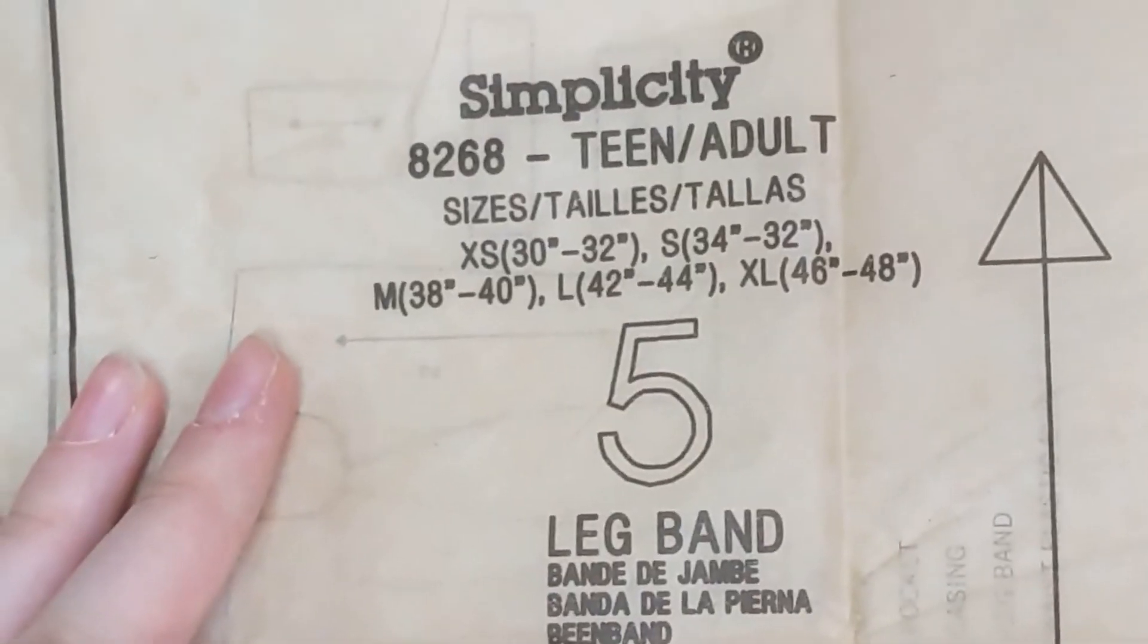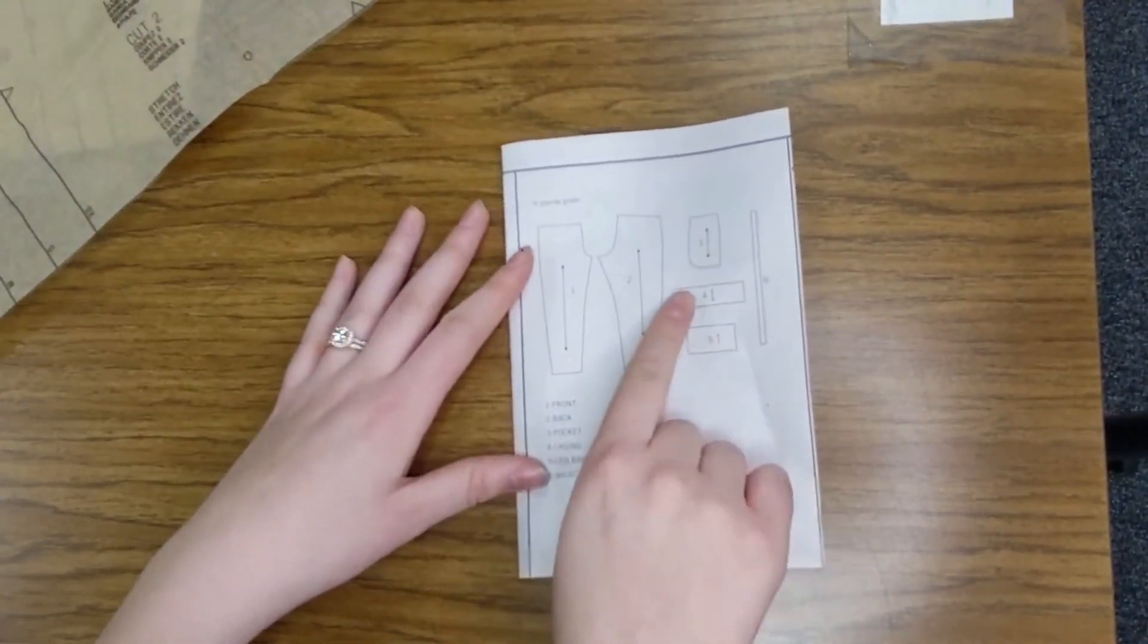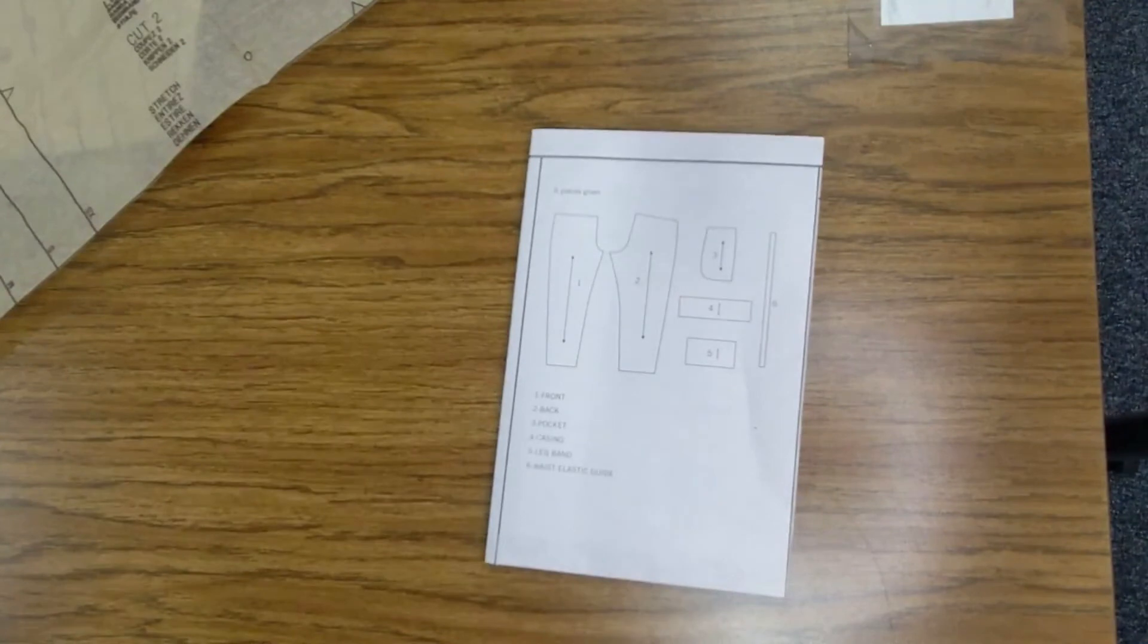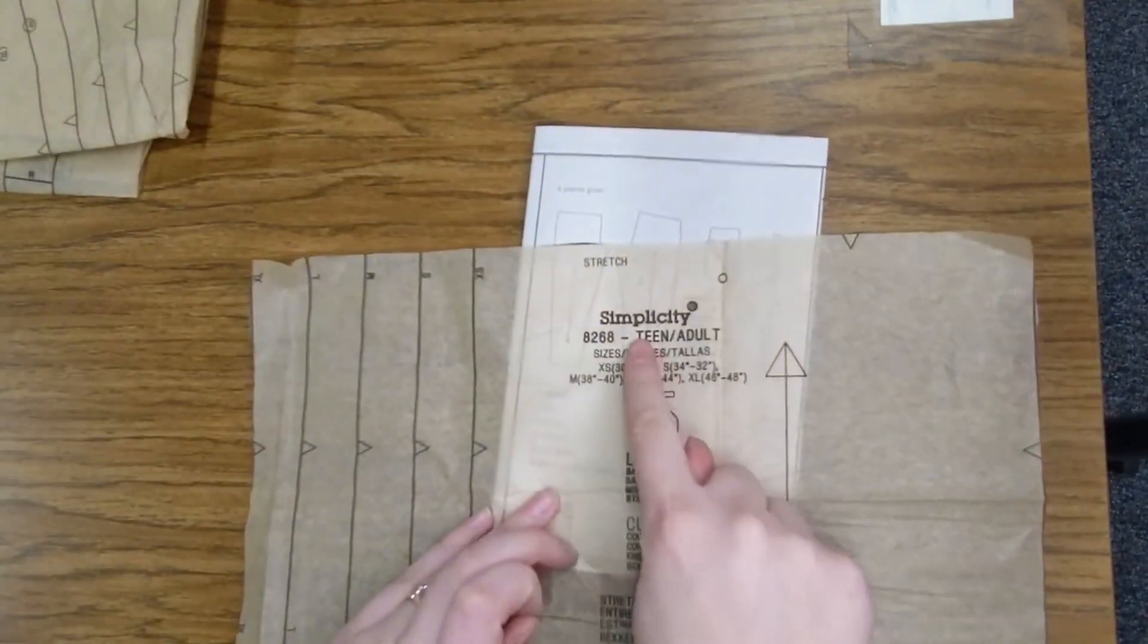So, this is our pattern tissue. That was a little introduction. You're going to go ahead and cut out pieces 1, 2, 3, 4, 5, and 6 of your pattern. Make sure that it says teen slash adult, not child slash teen.